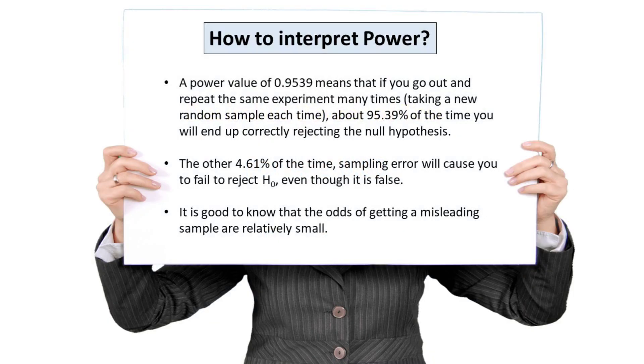A power value of 0.9539 means that if you go out and repeat the same experiment many times, taking a new random sample each time, about 95.39% of the time you will end up correctly rejecting the null hypothesis. The other 4.61% of the time, sampling error will cause you to fail to reject the null hypothesis, even though it is false. It is good to know that the odds of getting a misleading sample are relatively small.